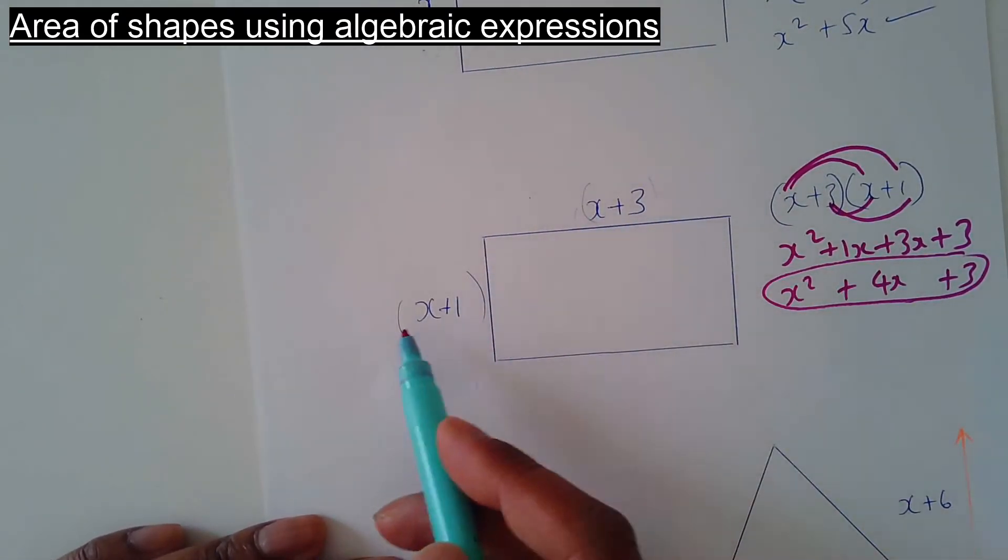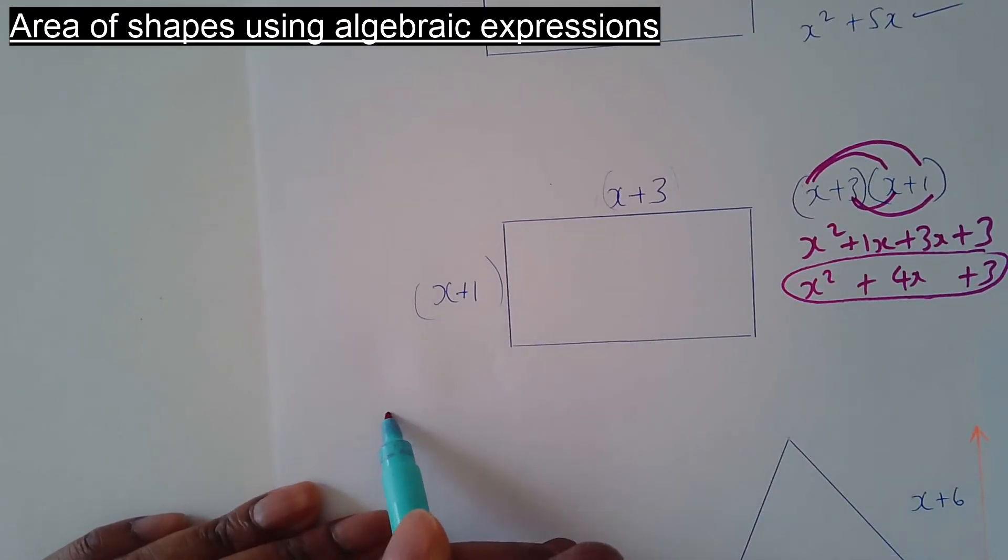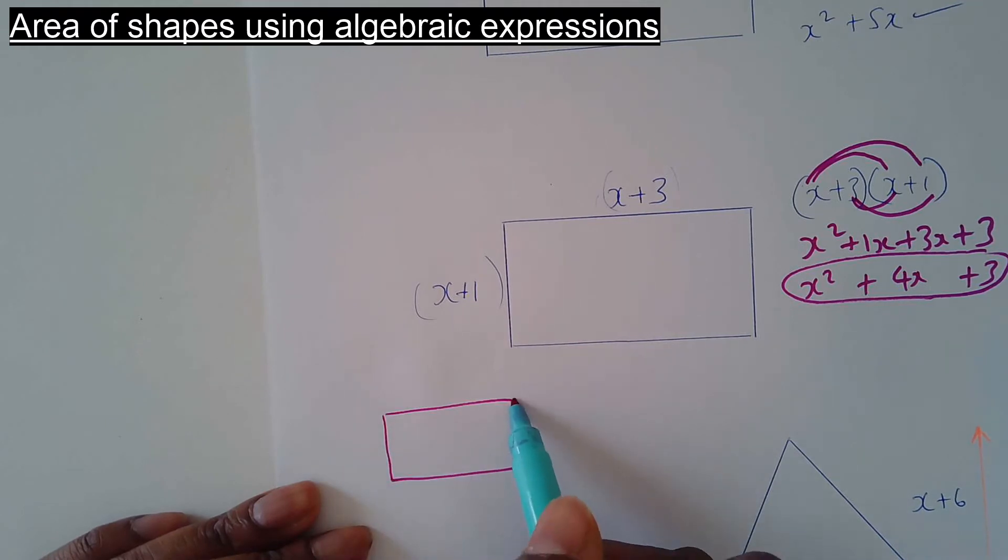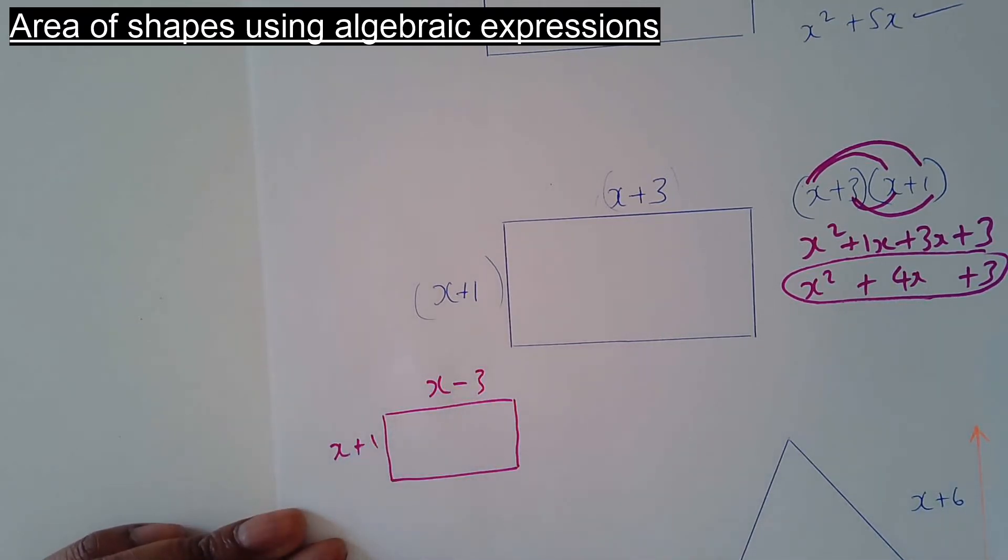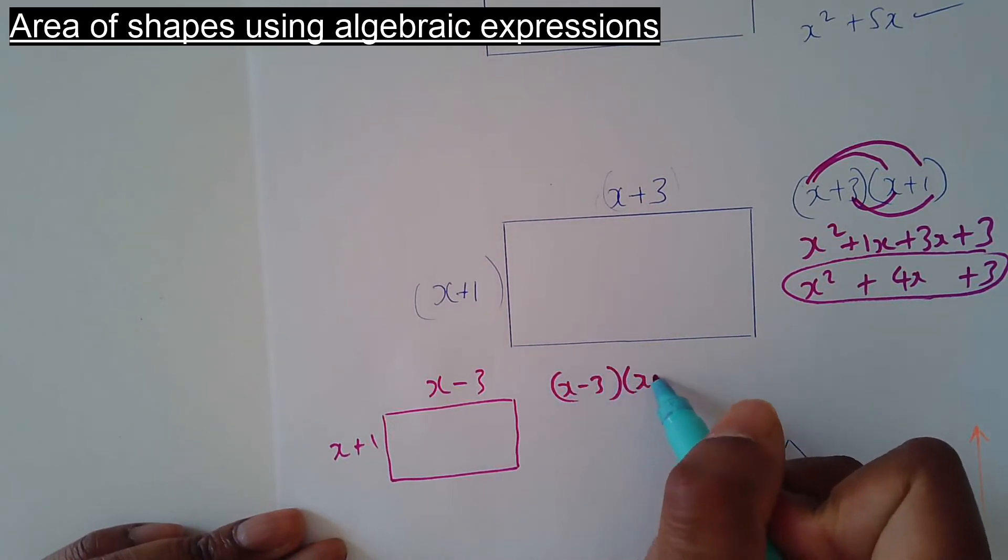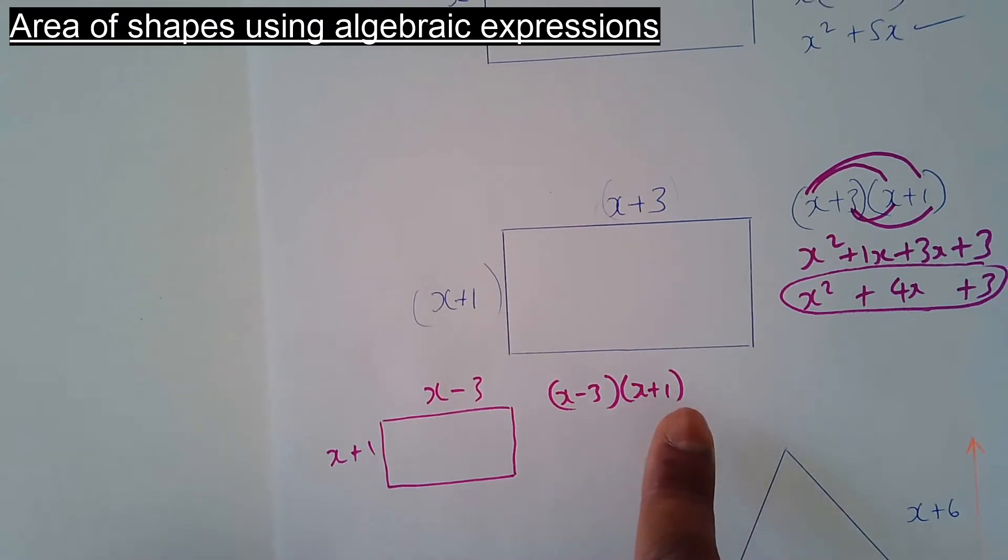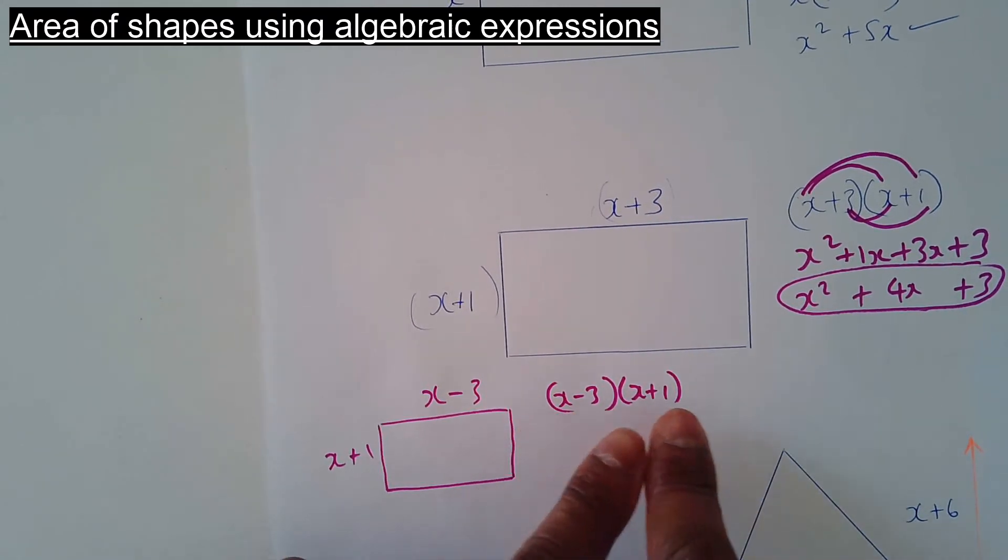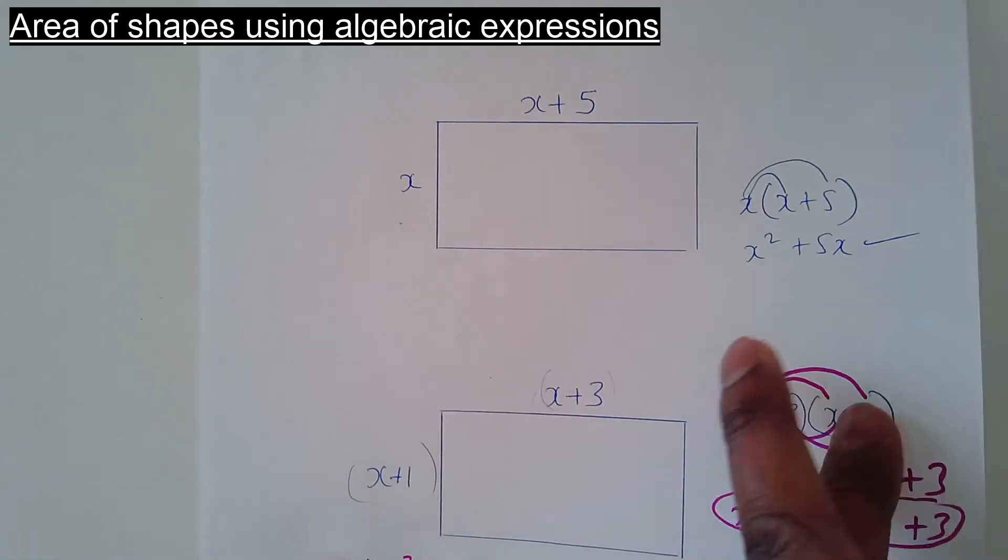If that was a negative number, let me just do one with a negative. Let's say you've got... To work out the area of that one then, it doesn't matter which order you put them. You can put the x plus 1 first, x minus 3 here. It does not matter which way you do these.